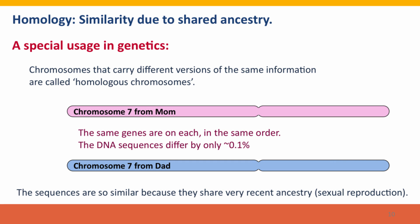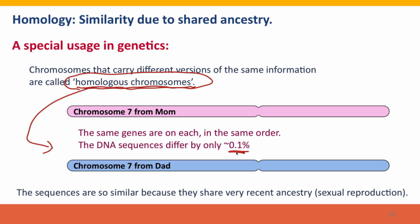In genetics, homology is used in a particular way in one particular case — the term homologous chromosomes. It's really the same meaning that homologous has everywhere else, similarly due to shared ancestry, but it particularly applies to the two versions we have of each of our chromosomes. Our chromosome seven from mom and chromosome seven from dad are referred to as homologous chromosomes. They are truly homologous because the reason they're so similar is that they're descended from very recent common ancestors — not species way back in evolutionary time, but humans who were our ancestors maybe only a few thousand years ago. So they're very similar because they share very recent common ancestry.